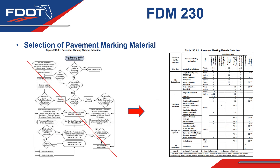Section 230.3.1, selection of pavement marking materials, was completely rewritten to streamline and clarify guidance for the selection of pavement marking materials for all pavement marking applications. As shown here, the flowchart from the 2022 FDM has been replaced with a table that indicates which material types are allowed given the pavement marking application and substrate type.